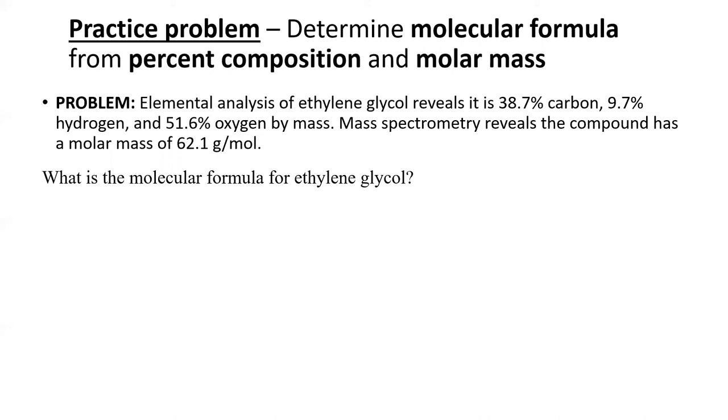However, for this specific problem, there's an easier way. Because we know the molar mass of the compound, I think we should assume that we have a 62.1-gram sample. This way, when we calculate the moles of each element in a 62.1-gram sample, we will also be calculating the moles of each element in one mole of the compound, which is the same as the molecular formula.